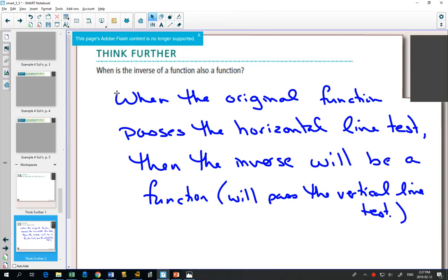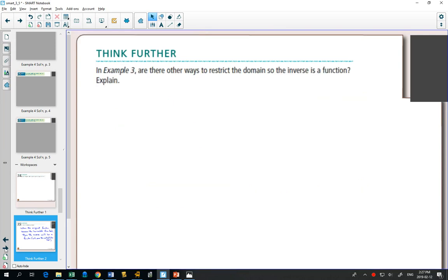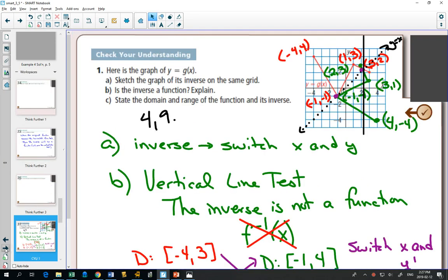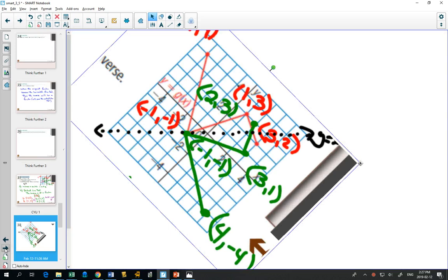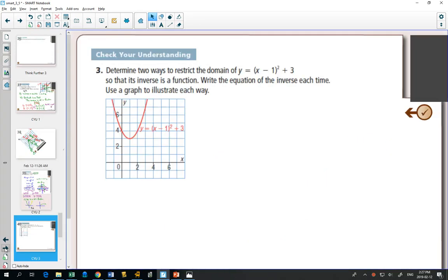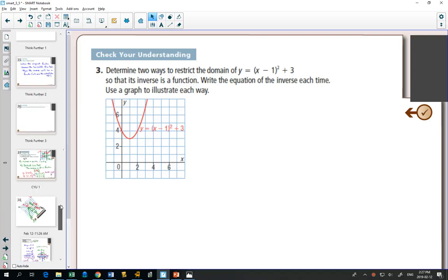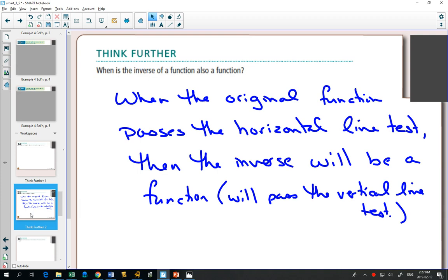And that leads into our third example, which says determine two ways to restrict the domain of this parabola so that its inverse is a function. Oh, did I go too fast? I get excited sometimes about what we're going to do. So just let me know, I can go back.